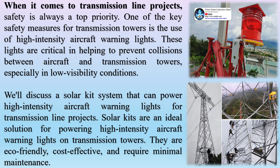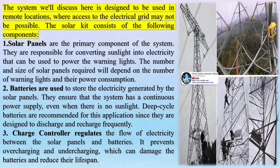The high-intensity B-type obstruction lighting is a white flash that flashes simultaneously at three levels of variable intensity during day, dusk or dawn, and night: 100,000 candelas ±25% in daytime, 20,000 candelas ±25% at dusk or dawn, and 2,000 candelas ±25% at night. It is mainly used for marking wires, cable towers, and high-voltage transmission line towers.